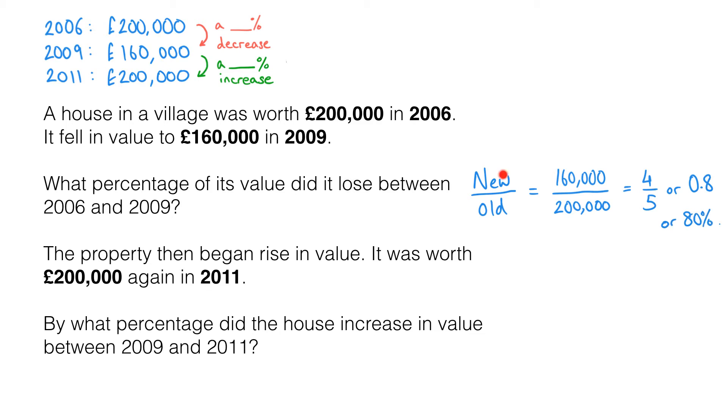Doing that here we find that that is 80%. Now that's not the end of the question. What we're saying is the new value is 80% of the old value. It hasn't lost 80%, it's still got 80% of its original value. So what has it lost? Well if it's gone down to 80% of its original value it has lost 20% of its original value. So it has lost 20%. That is the answer to this question.